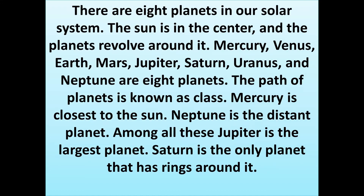There are 8 planets in our solar system. The sun is in the center and the planets revolve around it. Mercury, Venus, Earth, Mars, Jupiter, Saturn, Uranus and Neptune are the 8 planets.